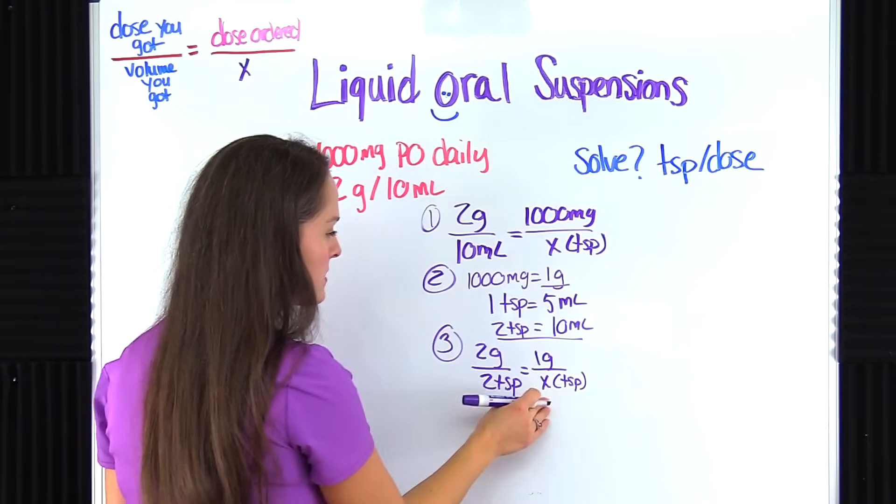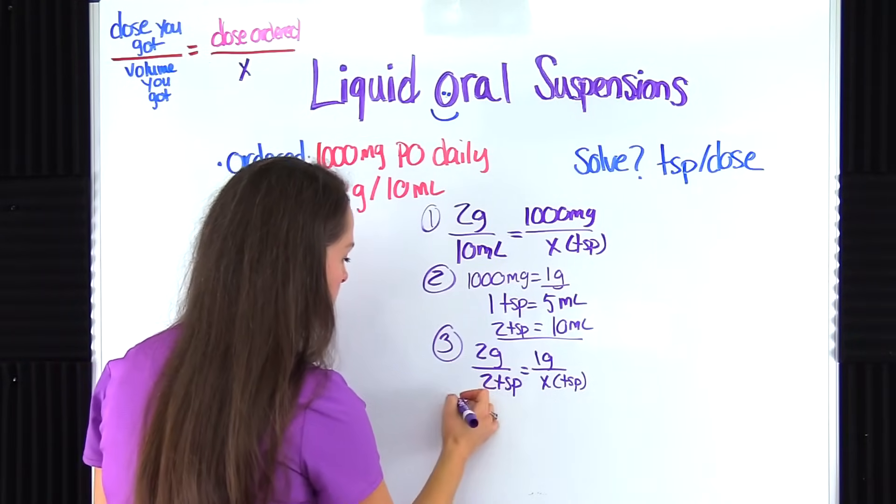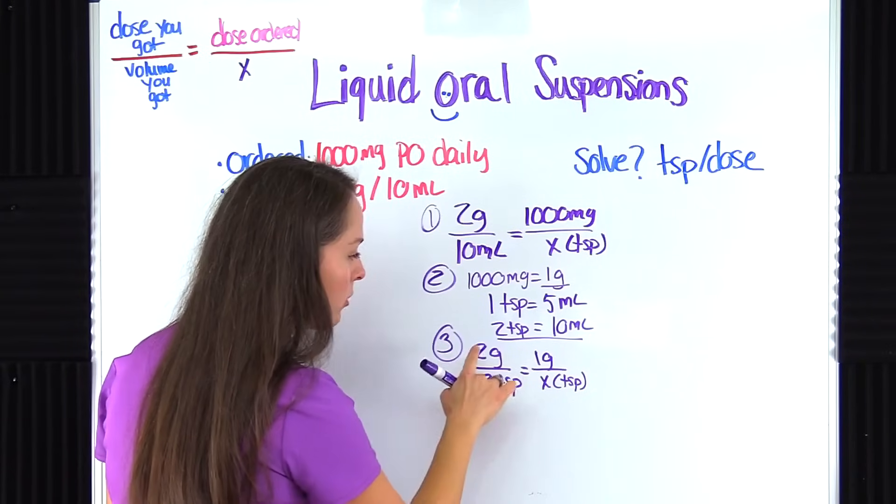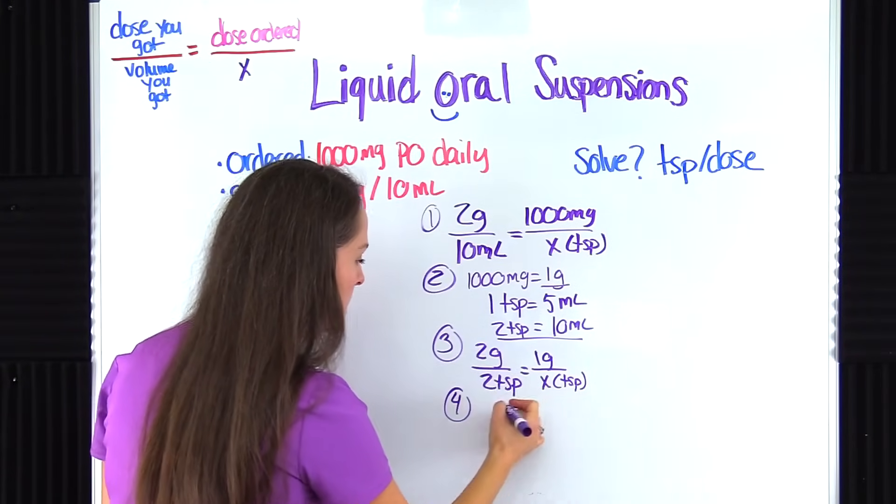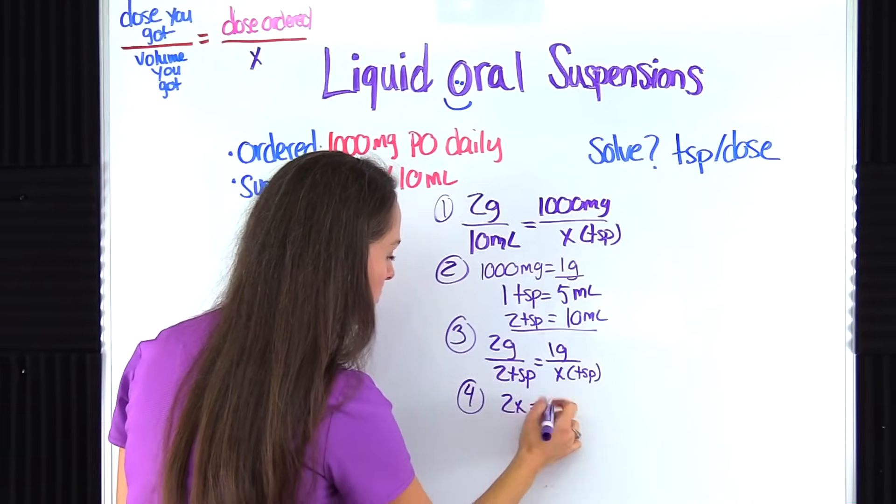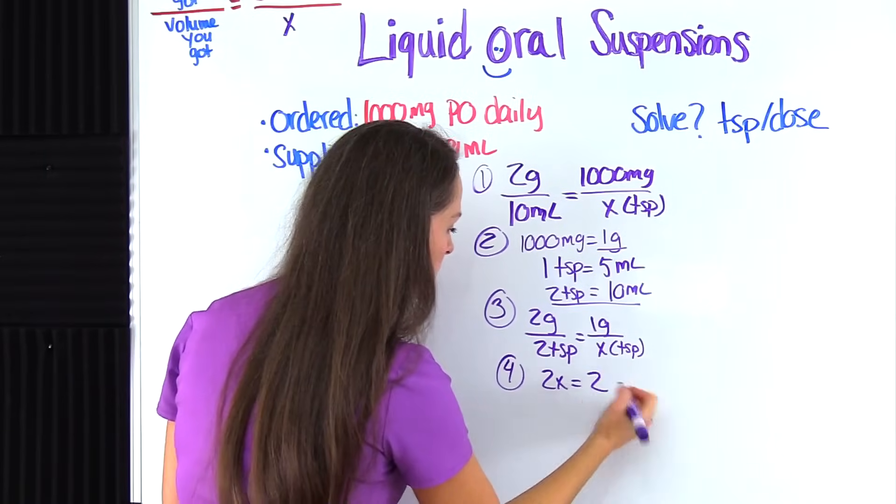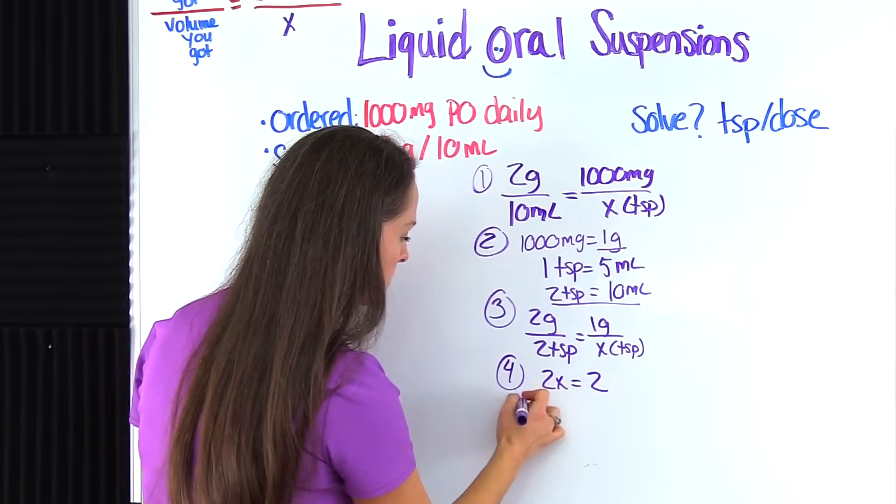So now let's go ahead and isolate x and get it figured out. So step four. Okay, we're going to cross multiply. So 2 times x gives you 2x equals 2 times one gives you 2. We've got to get x all by itself. So let's go down to step five.